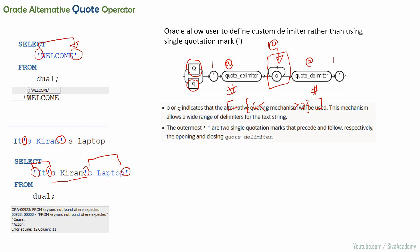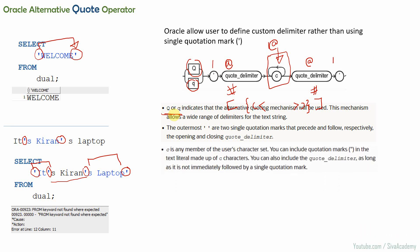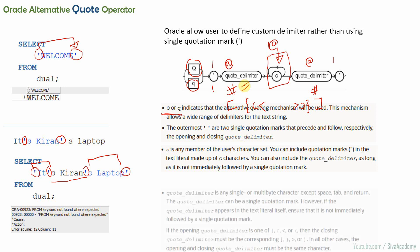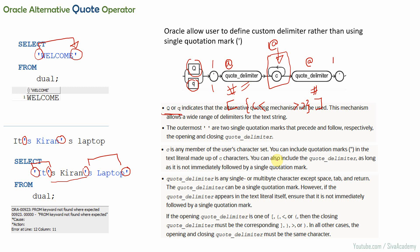Let me take you through a snippet from the Oracle documentation. The key thing is that you have to use either capital Q or lowercase q to indicate that you are using a custom delimiter. Followed by a single quote, then the custom delimiter — your chosen special character — then the actual string content, and finally the same special character followed by a single quote. If you are using any bracket characters like square brackets or other brackets, you should end with the corresponding closing bracket.